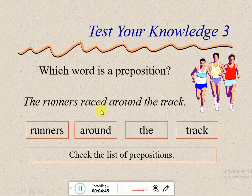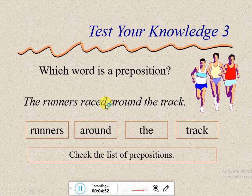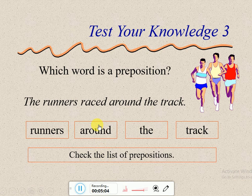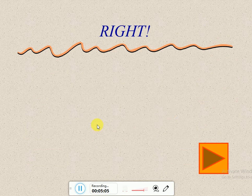'The runners race around the truck.' 'The runners' — noun. 'Race' — a verb. 'Around' — that is the preposition. 'The truck' is the object. If you're not sure, go back to the table. So 'around' is the preposition — فaround هي البروبزيشن.